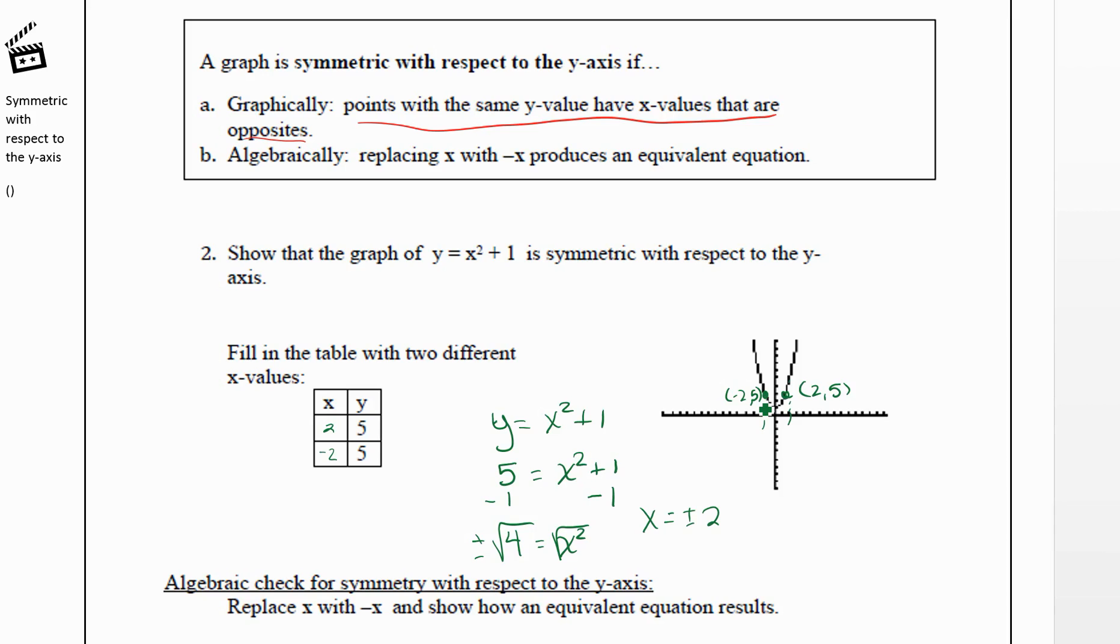Now, how we will tell if a function is symmetric with respect to the x-axis without graphing it is wherever there's an x, we're going to plug in negative x. So we'd have y equals negative x squared plus one. Now, negative x squared is the same as negative x times negative x. Well, when we take negative one times negative one, we just get one. And x times x is x squared.